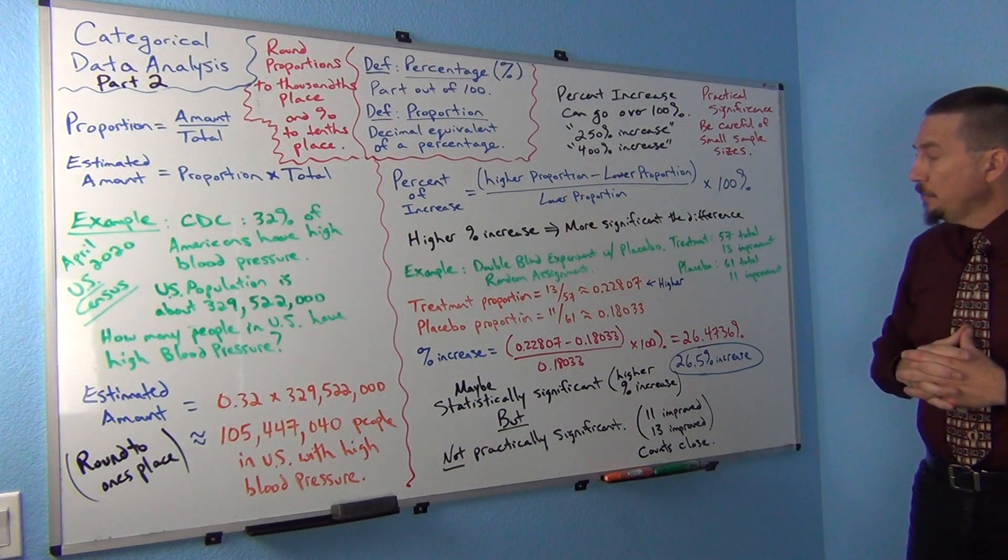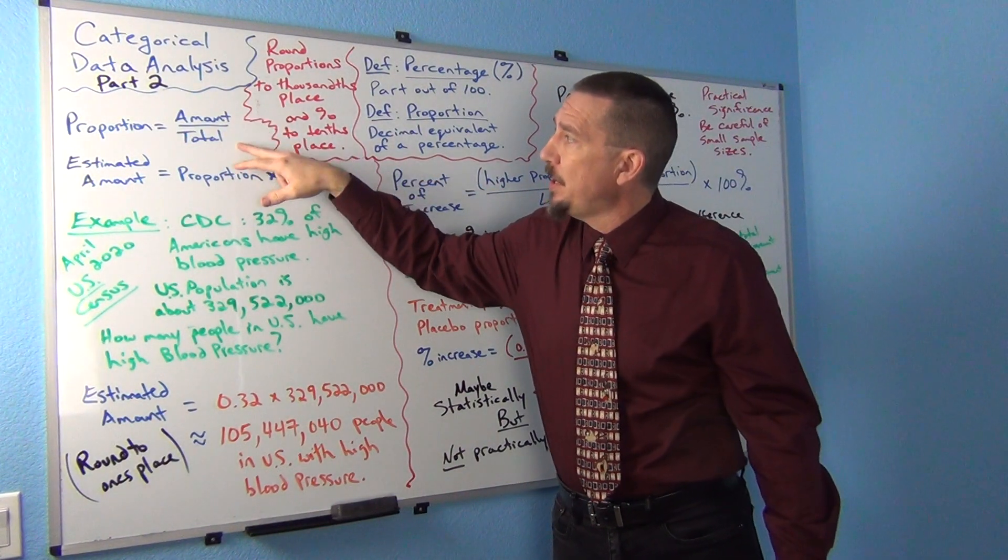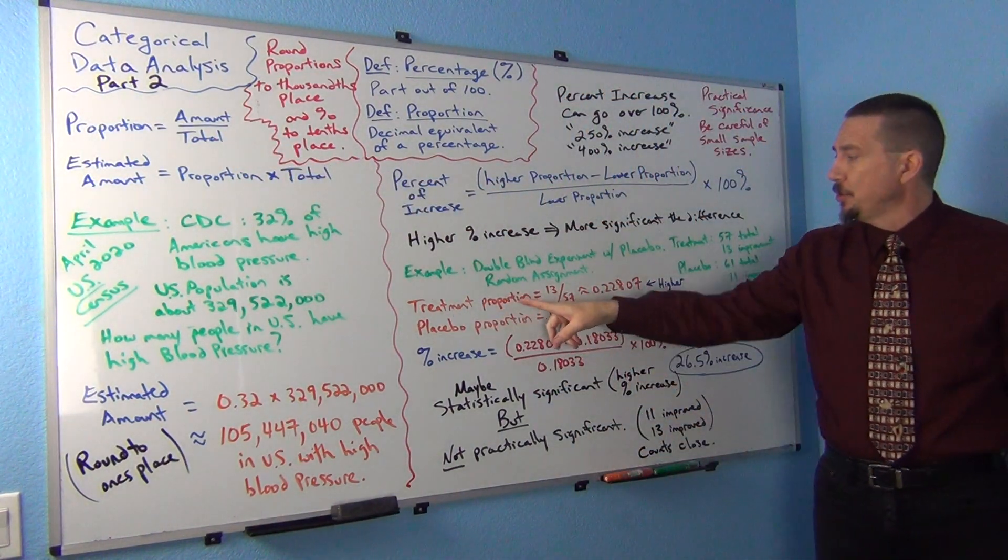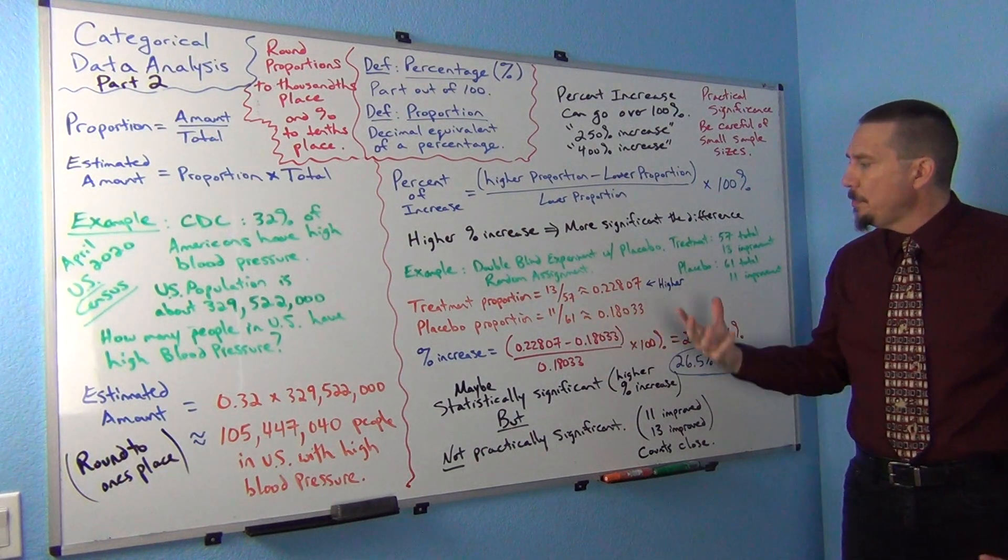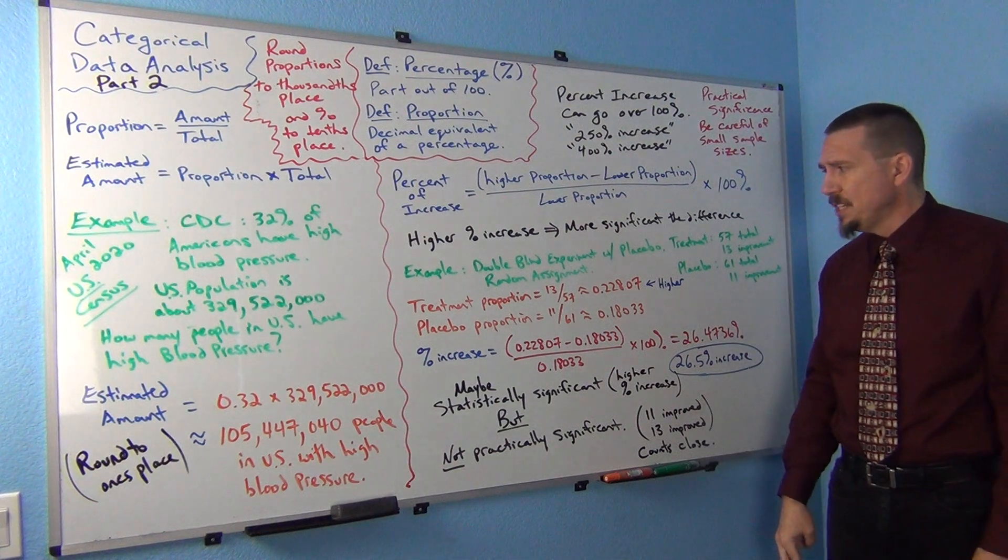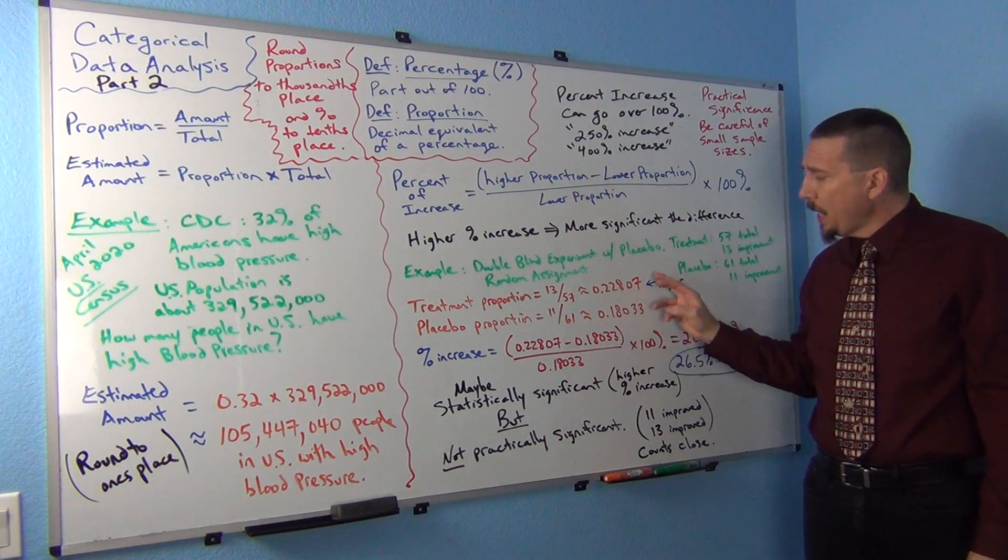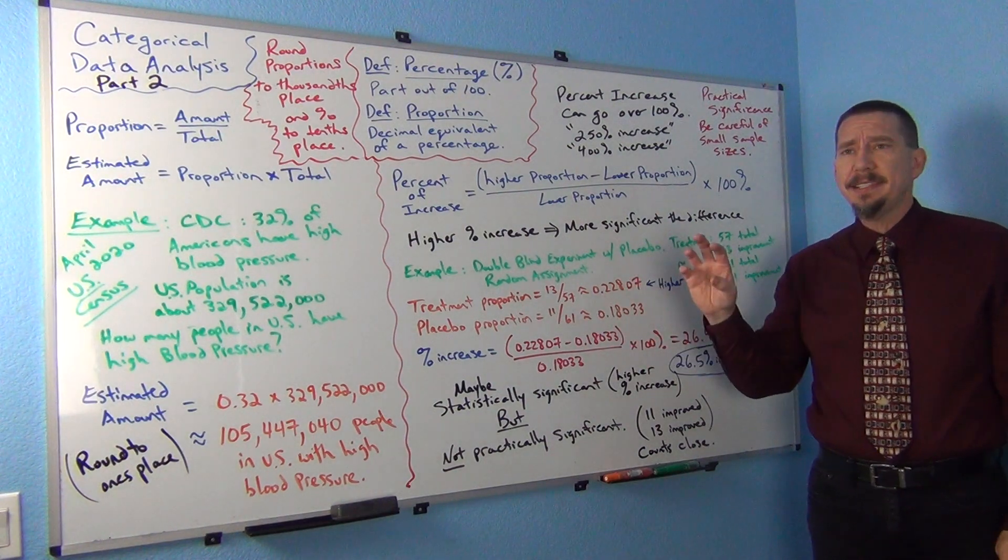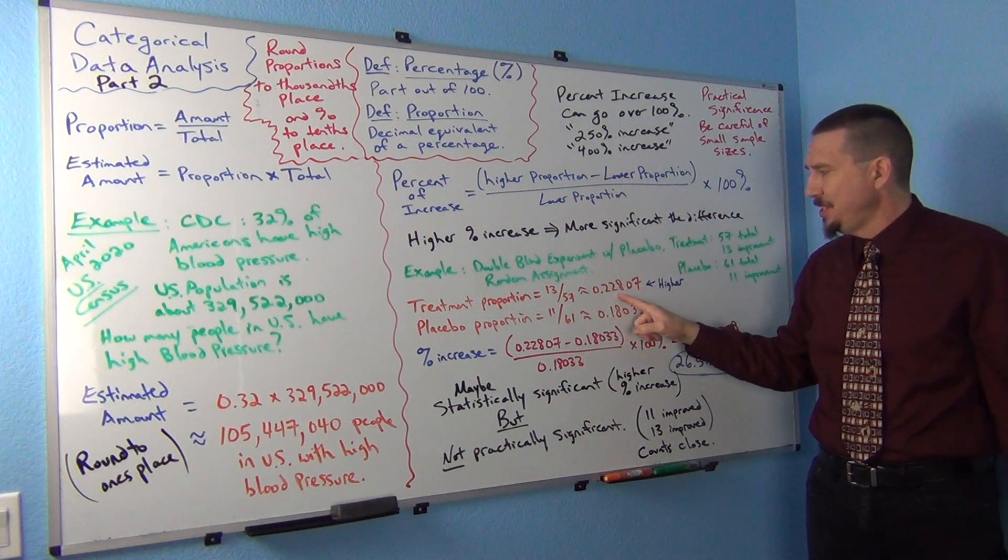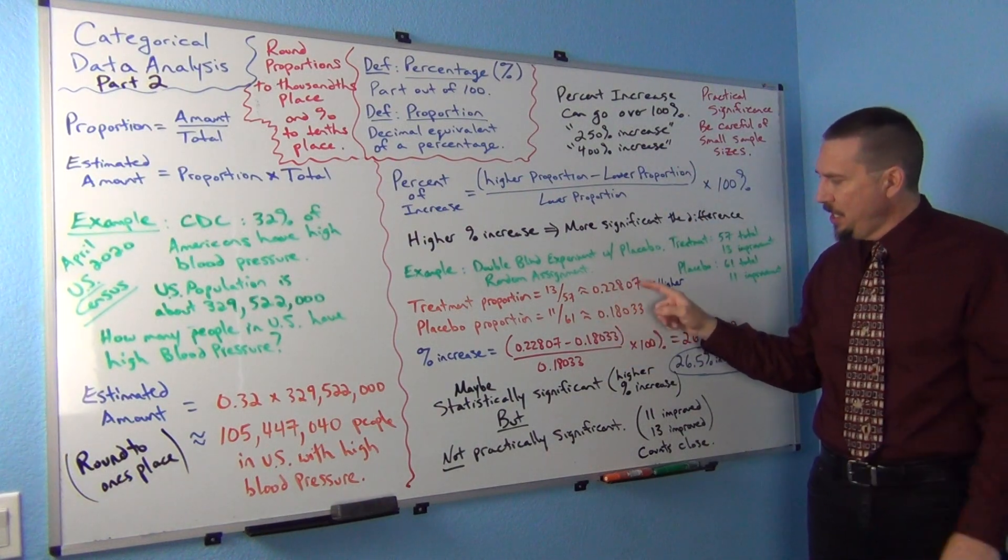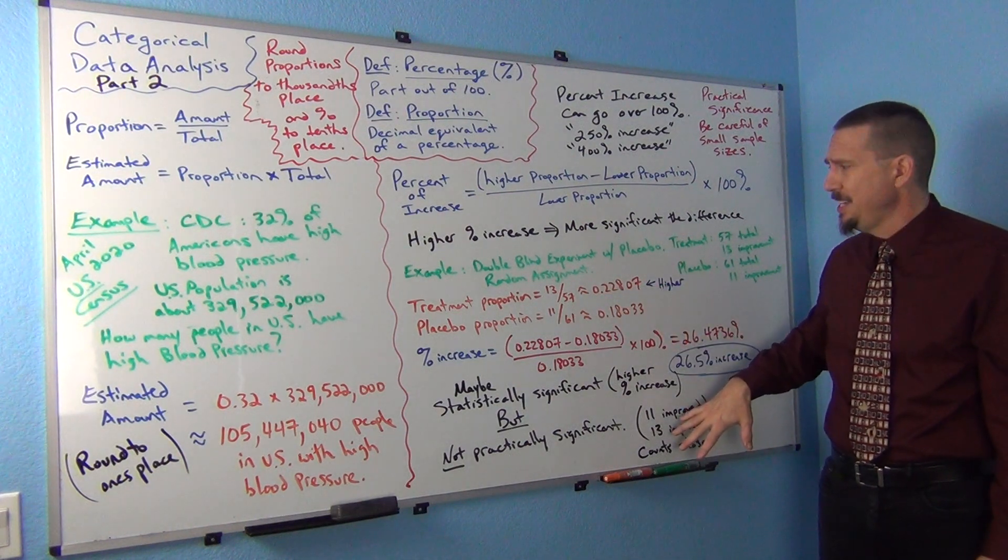Okay. So the first thing you need to figure out is what is the proportion. Well, remember the proportion is the amount divided by the total. So for the treatment group we had 13 divided by 57 which would be about .228 as a proportion. Now again, and then I could round this. Just realize that in stats if you use a number to calculate something else. In other words, I'm going to use this number to calculate something else.